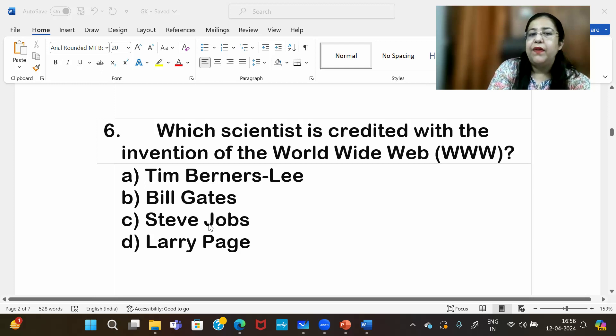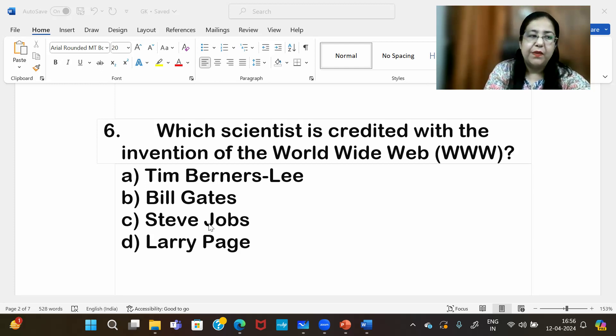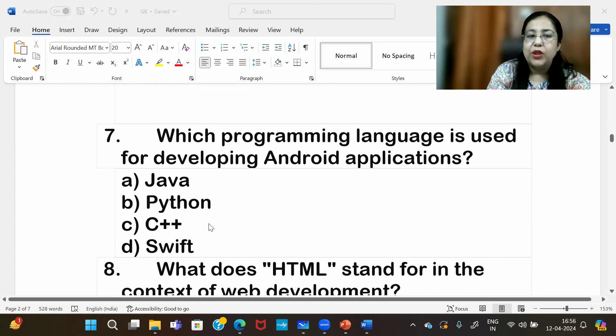Which scientist is credited with the invention of the world wide web, which is our WWW? His name is Tim Berners-Lee, because he is the one who started HTML and started making websites. Then we have the world wide web concept. Tim Berners-Lee is the correct answer for question number six.